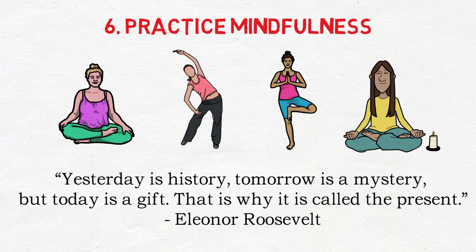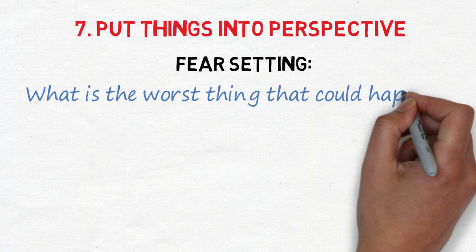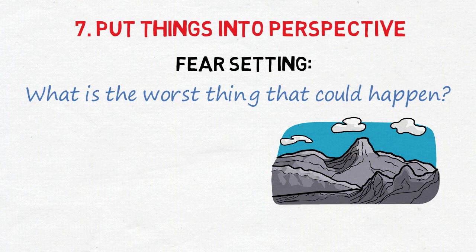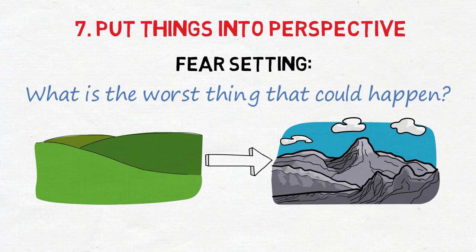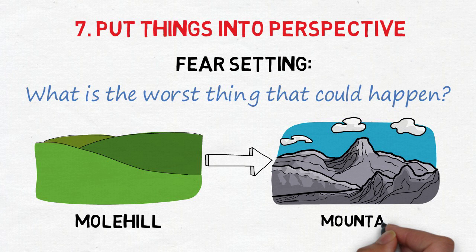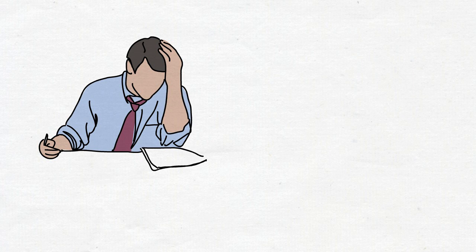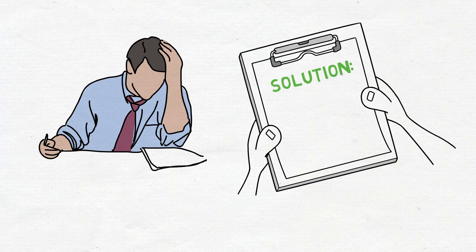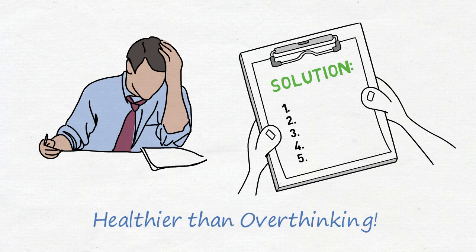Number seven, put things into perspective. I first heard about an exercise called fear setting about 10 years ago, and it's greatly helped me since. When facing a problem or a big decision, ask yourself, what is the worst thing that could happen? Normally, the answer isn't all that bad when you look at things from a larger perspective. Most of the time, you are making a mountain out of a molehill. And let's say that the worst outcome is something horrible that you can't live with. You can go back to tip three and go into problem solving mode. How can you avoid that event? Or how can you react if it does happen? These are much healthier thought patterns than sitting there and dwelling.